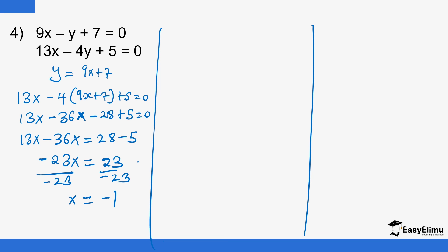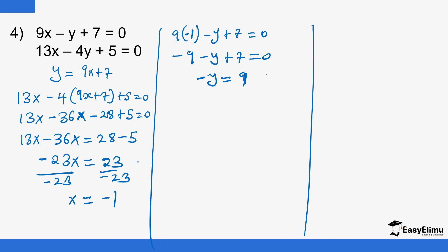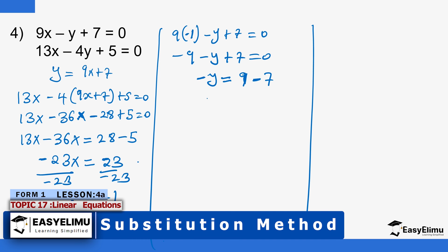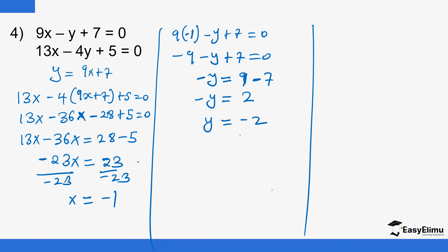Substituting x equals negative 1 into equation 1: 9 times negative 1 minus y plus 7 equals 0, so negative 9 minus y plus 7 equals 0. Taking the numbers to the other side: minus y equals 9 minus 7, so minus y equals 2, meaning y equals negative 2. Therefore x equals negative 1 and y equals negative 2.